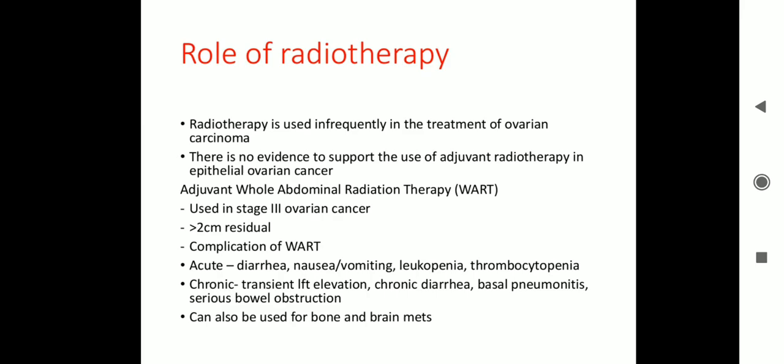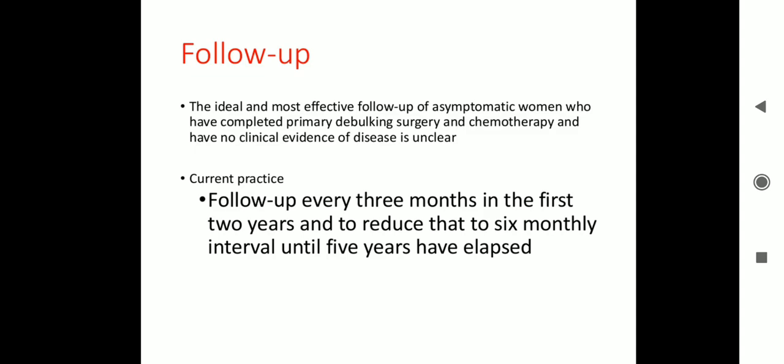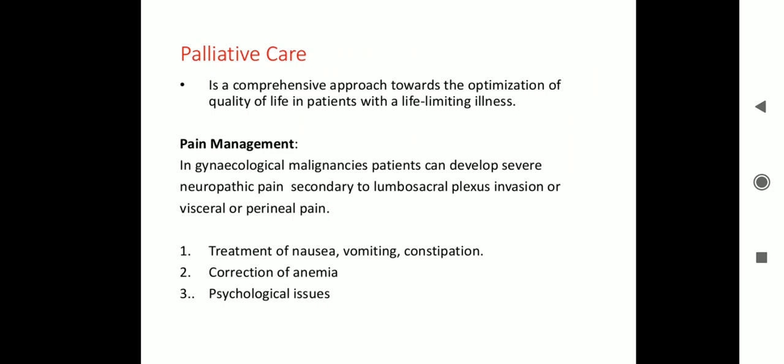Follow-up: the ideal follow-up for asymptomatic women who have completed primary debulking surgery and chemotherapy with no clinical evidence of disease is every 3 months in the first 2 years, reducing to 6-monthly intervals until 5 years have elapsed. Palliative care includes pain management, treatment of nausea, vomiting and constipation, correction of anemia, and addressing psychological issues.